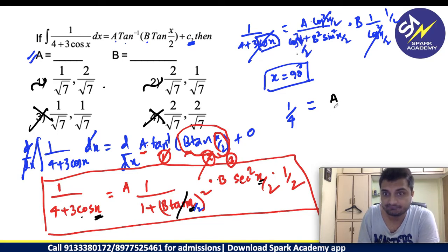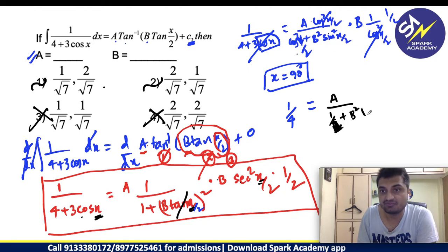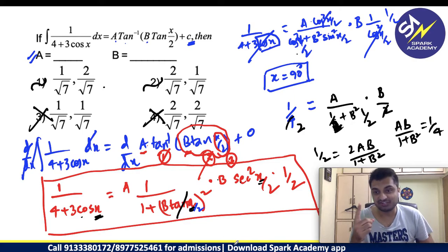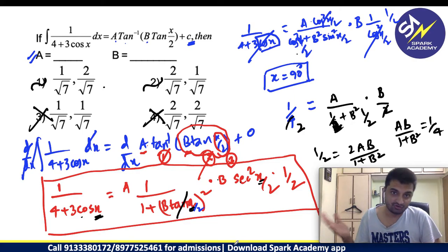Again cos of 90 by 2 is cos 45. This is what A by, this is cos square 90 by 2 cos square 45 is 1 by root 2 plus B square, 1 by root 2 whole square. This will be 1 by 2, B square, sin square means again 1 by 2 you are getting, into B by 2 you are getting. 2 goes 2 times. 1 by 2 is common everywhere. 2 AB by 1 plus B square is 1 by 2 or AB by 1 plus B square equals to 1 by 4.